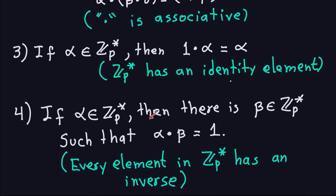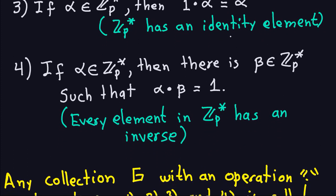Property four is the least intuitive: for every element alpha in Z_p*, I can always find another element beta such that alpha · beta equals one — the identity element. This is like inverses in the real numbers: the inverse of two is one-half, the inverse of three is one-third. Here the inverses are still numbers in Z_p*, since multiplication is modulo p. I'll give an example of why this always works.